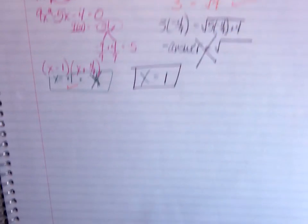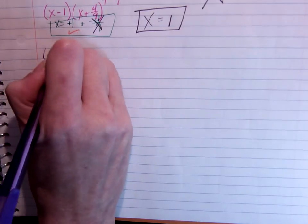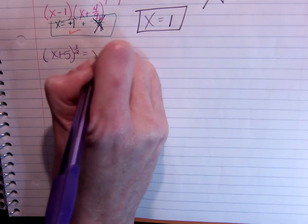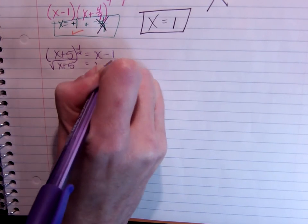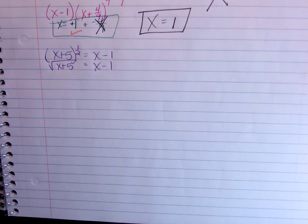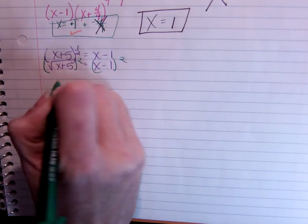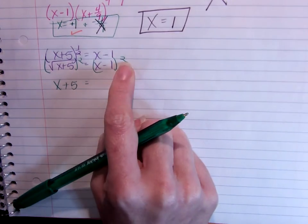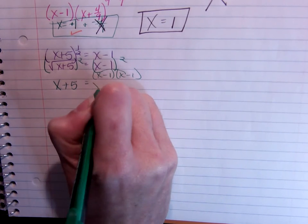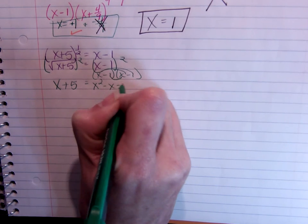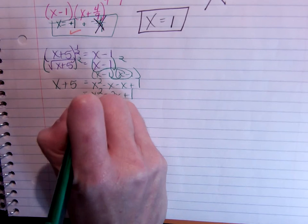Okay, one more example. Let's try now x plus 5 raised to the 1 half equal to x minus 1. Remember that raised to the 1 half means the same thing as taking the square root. And either way, we're going to square both sides to clear the exponent or the radical either way. Square both sides. And now we're looking at x plus 5 is equal to, be careful here, this is not x squared minus 1. I have to multiply x minus 1 times itself and get x squared minus x minus x plus 1. Simplify. x squared minus 2x plus 1 is equal to x plus 5.